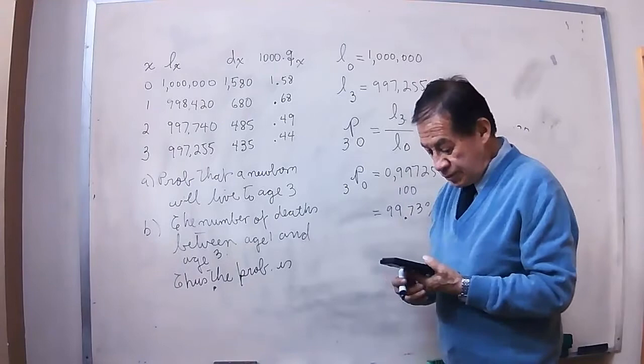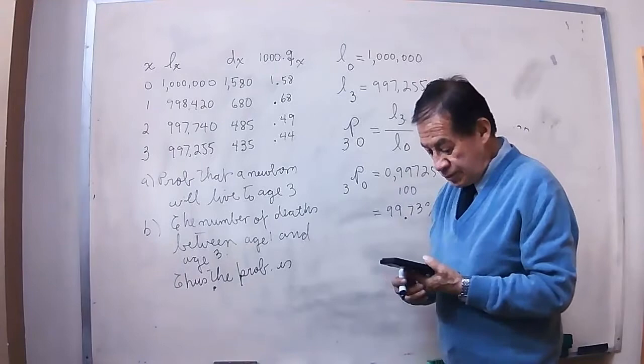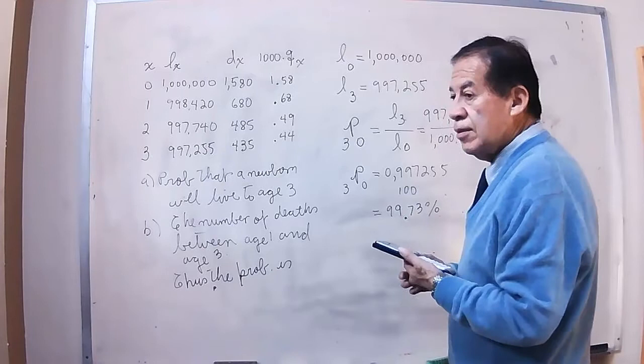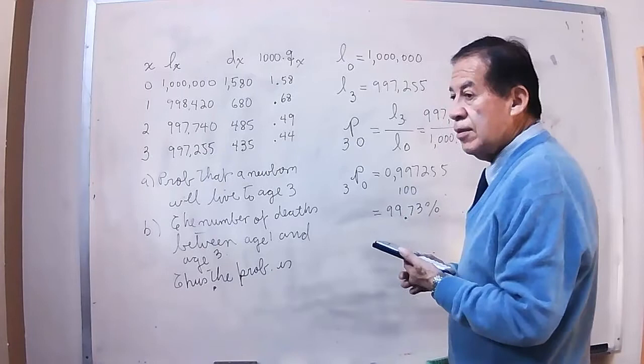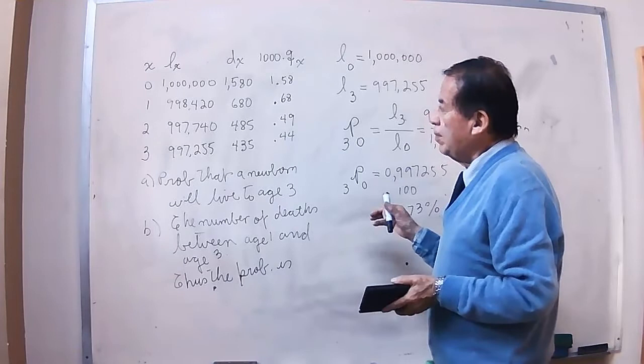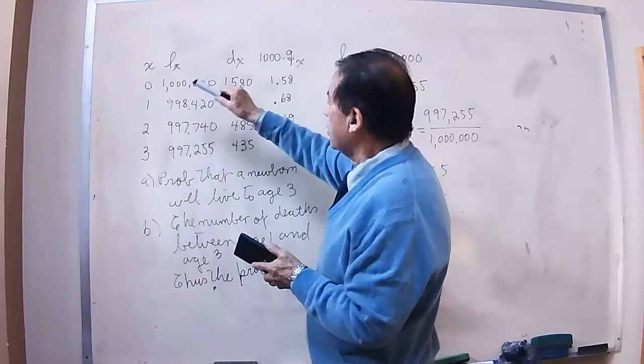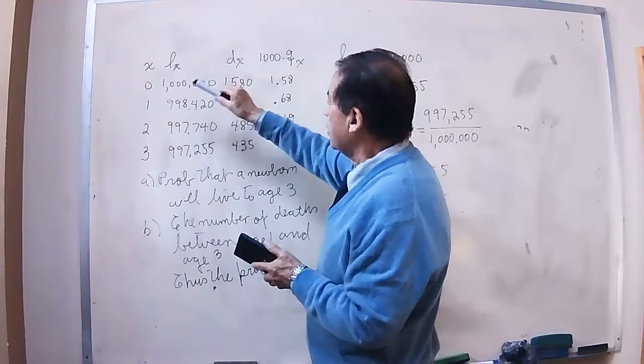Now, the tables are made by experience going, for example, to a cemetery. You go to a cemetery and you make a statistical computation of how many people was born and how many people was dead, age by age. And if you summarize these results, you will have a similar table like this.